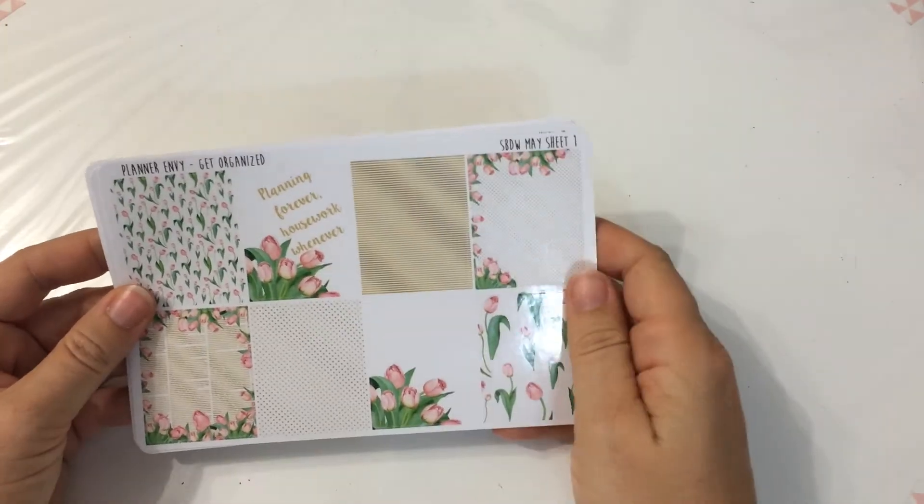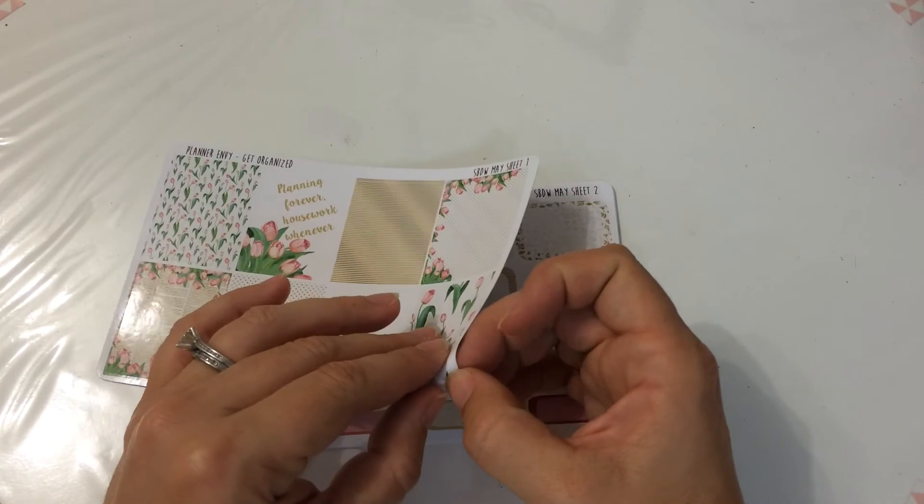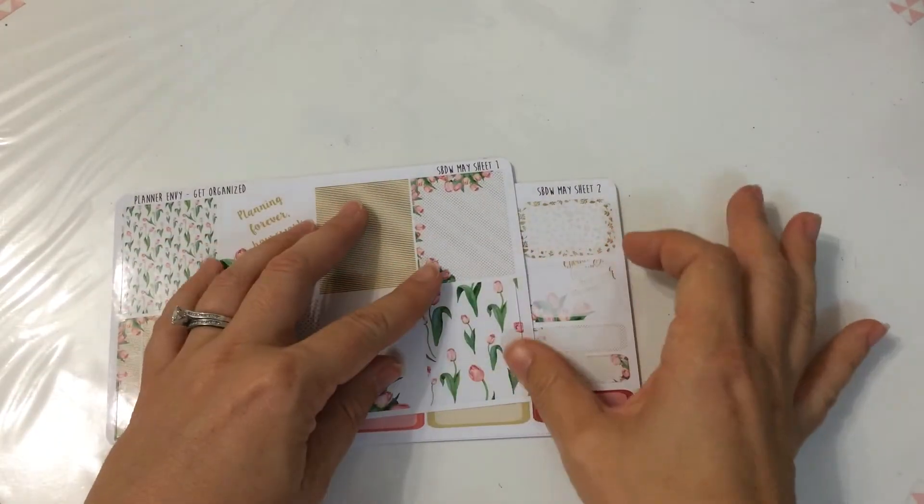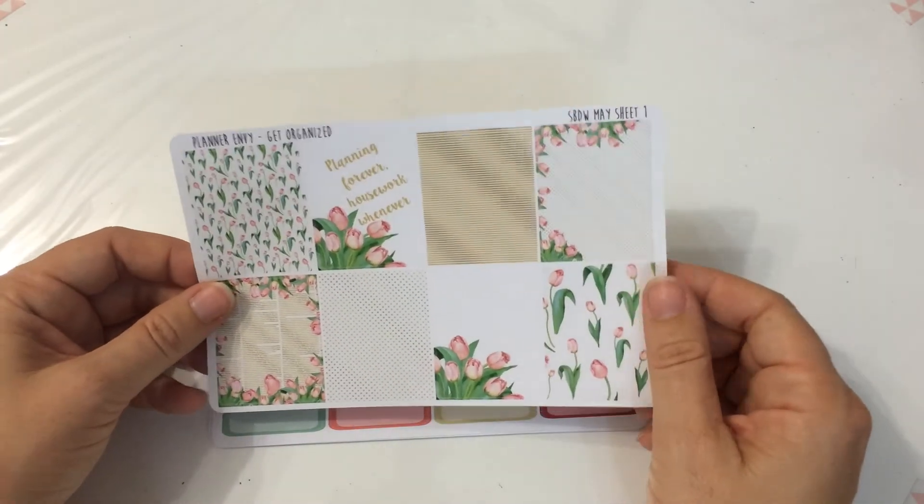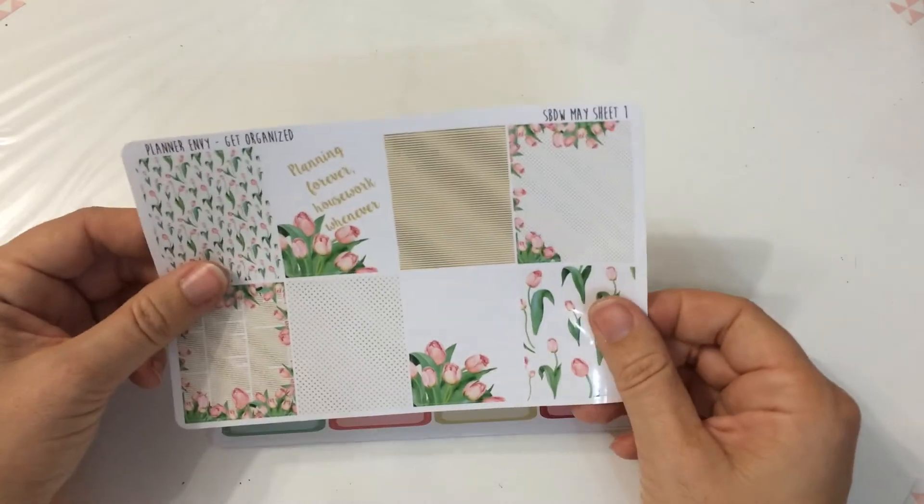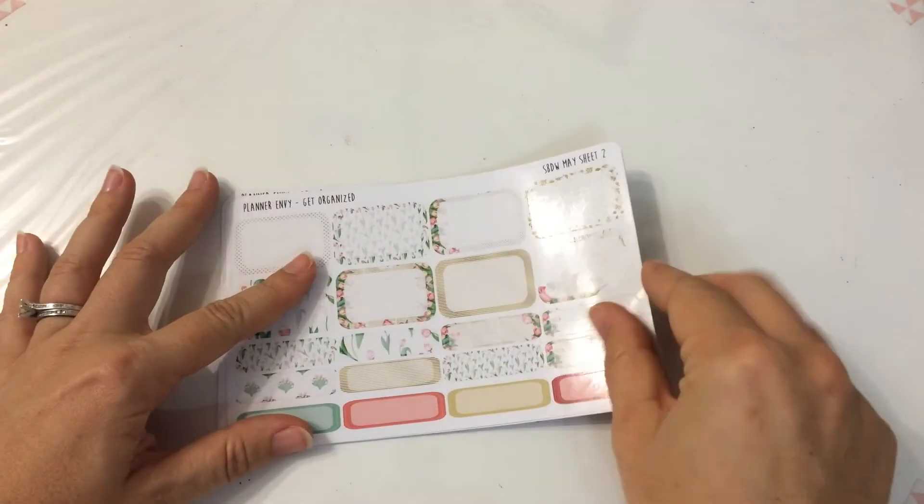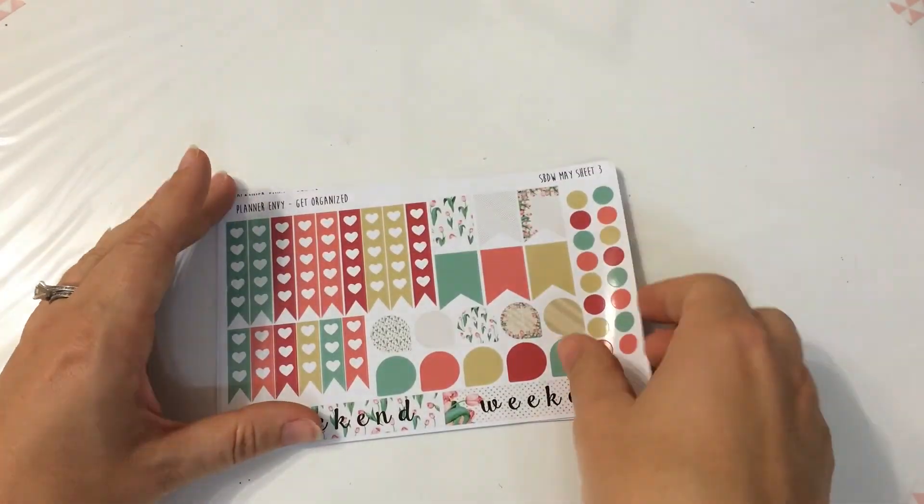So it comes with this is sheet one, the full boxes. Again they're not full boxes for my planner but I can make it work. Comes with washi and stuff I'm pretty sure. I very rarely do a no white space anyway. It comes with these boxes, half boxes, quarter boxes.